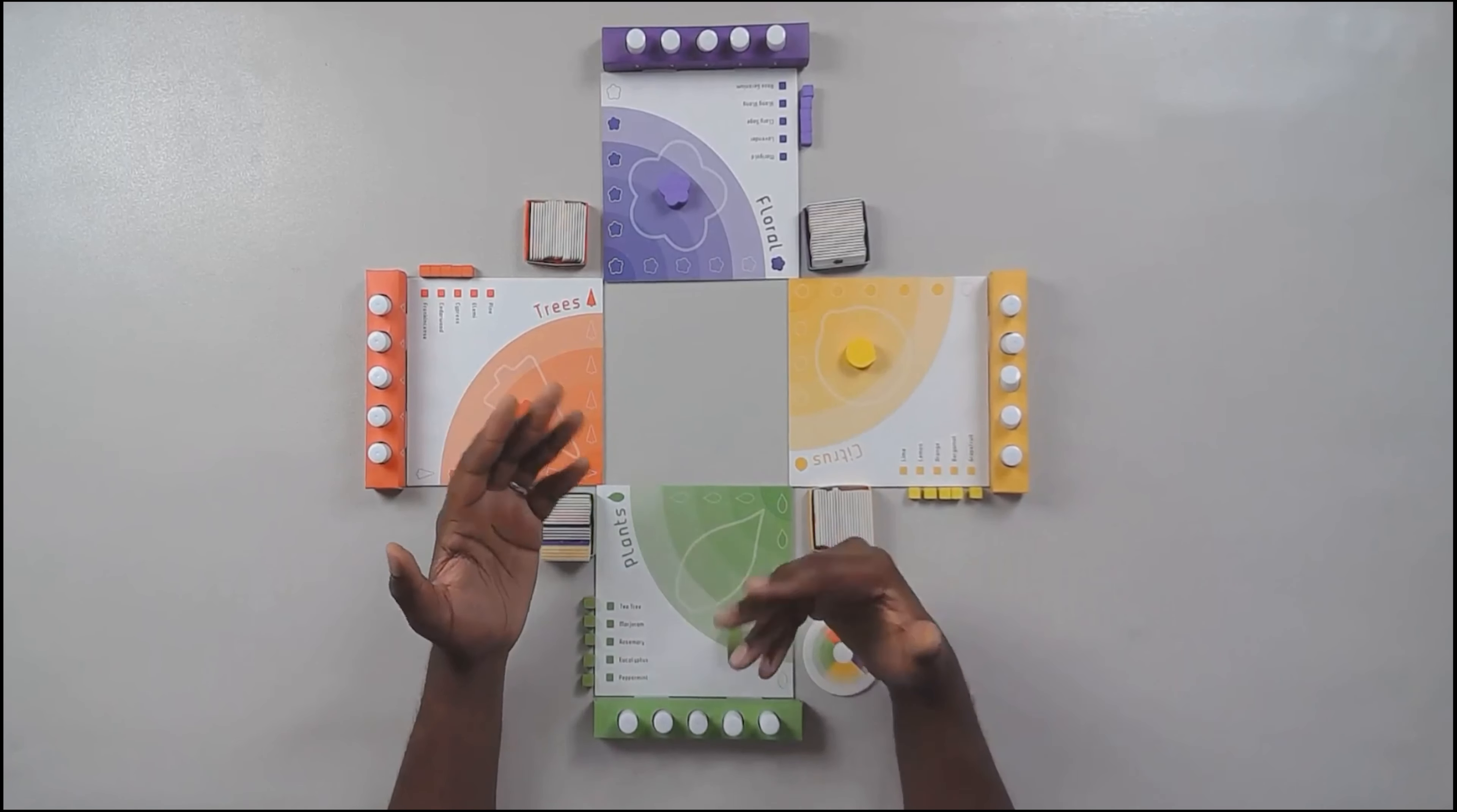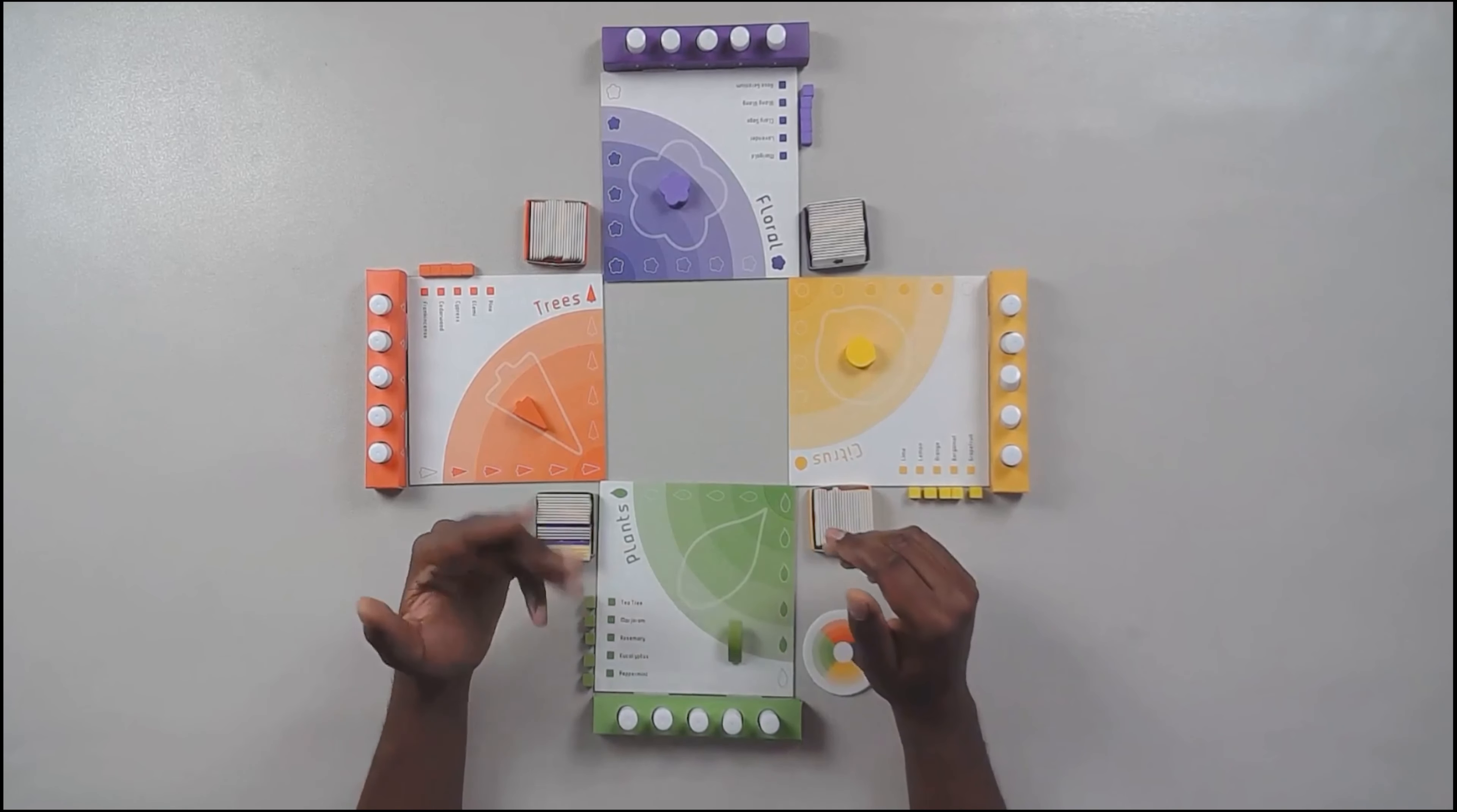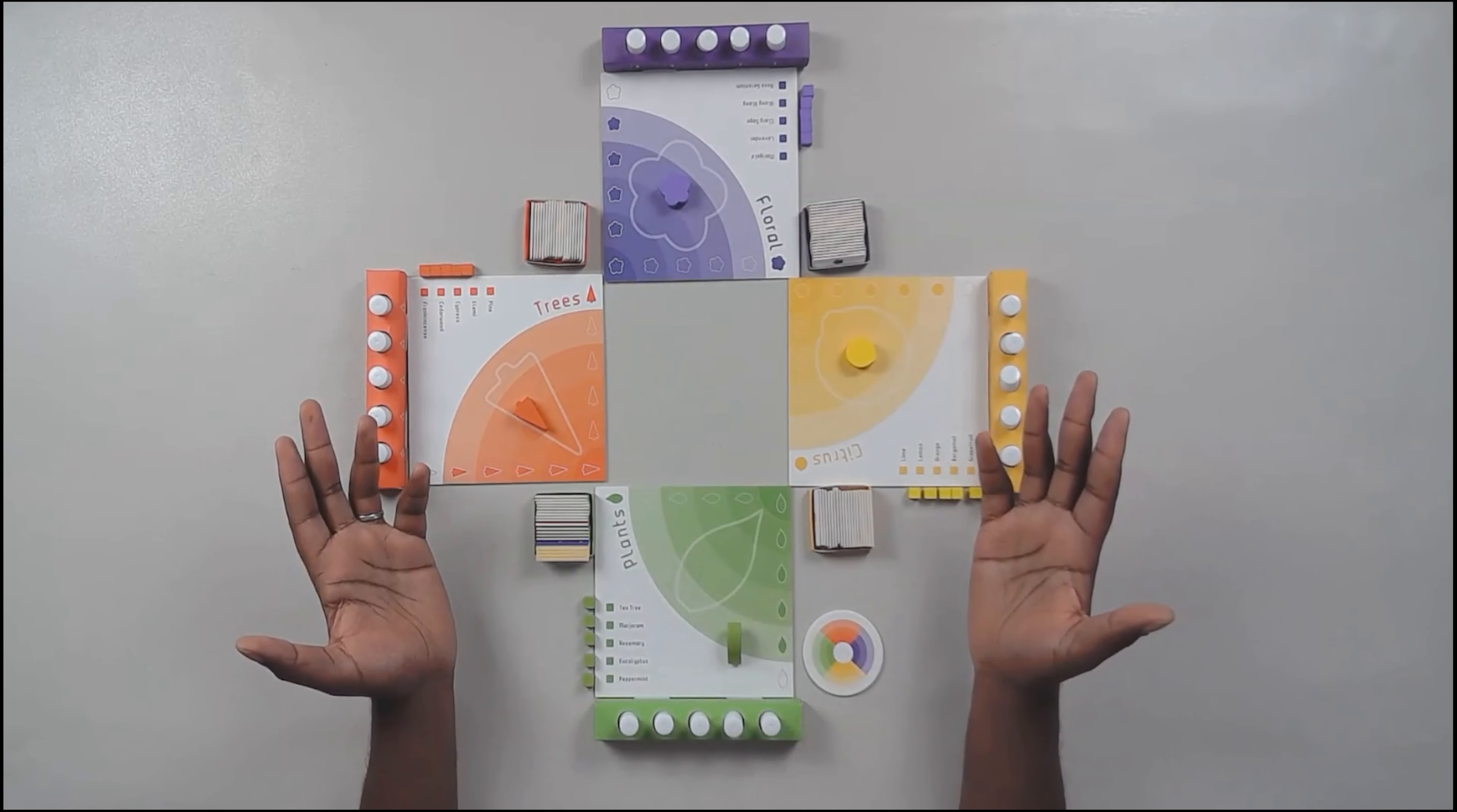So play basically continues until players either guess one that does belong to them or they guess incorrectly. If you keep guessing correctly, but it doesn't belong to you, you can keep picking scents until you either guess incorrectly or you find one that belongs to you and then you keep it. And then the next player goes. You might be asking yourself, couldn't other players just watch where those scents get put in other people's trays. You can switch around the oils in your tray as long as you don't do it while someone is guessing. Ultimately, the player that collects all of their own scents first is the winner.